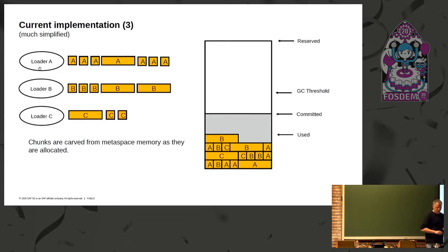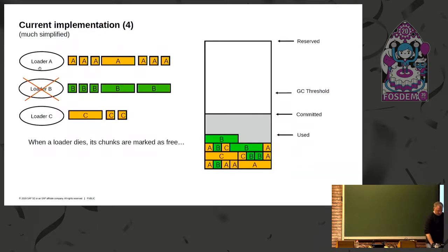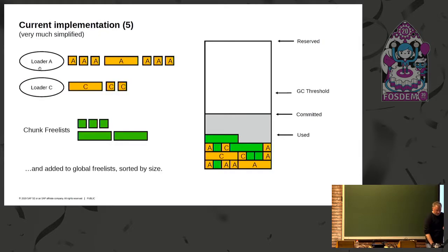Note also that if you think you only have one loader, this is usually not correct, because the VM also creates tiny loaders for reflection glue code or for inner classes for lambdas, and they appear all over. When a loader dies and is collected, its chunks are marked as free and added to a free list, and they may be reused in the future. If you never resume class loading, this is essentially wasted memory.